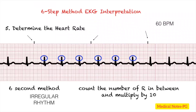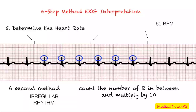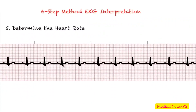Be very careful when using the six-second method — always verify that the strip you are reading is indeed a six-second strip. Some strips may appear to be six-second strips but lack the required three tick marks. Using this method on a non-six-second strip will give an incorrect heart rate.